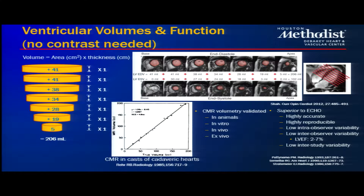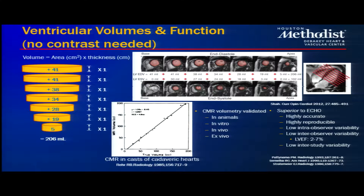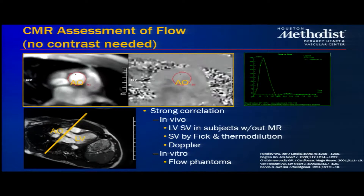For assessing ventricular volumes and function, we do not need contrast — you can order a CMR without gadolinium for quantification. We can get very accurate biventricular volumes and function, validated in animals, cadaver hearts, and in vitro against fixed specimens and echo. We make no geometric assumption about the heart, and since we can set an unlimited number of scan planes, we can align ourselves to see everything we need.